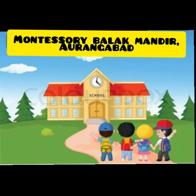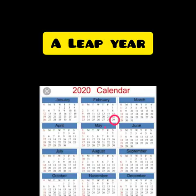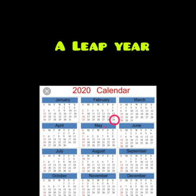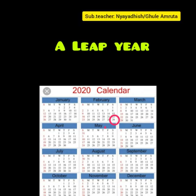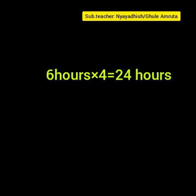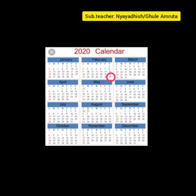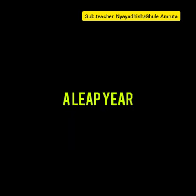It means that it counts 6 hours less every year. That makes 24 hours or 1 day in every 4 years to make up for this lost day. The month of February in the Gregorian calendar has an extra day every 4th year. That year is called a leap year and it has 366 instead of 365 days, and February has 29 instead of 28 days.